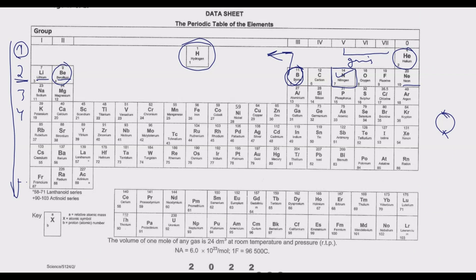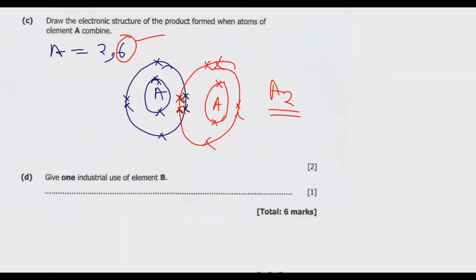Looking at the next question: this element is in group 6 of the periodic table and has 8 electrons — this should be oxygen. It is important that you identify the name of the element before you start giving any answers. So what are the uses of oxygen?